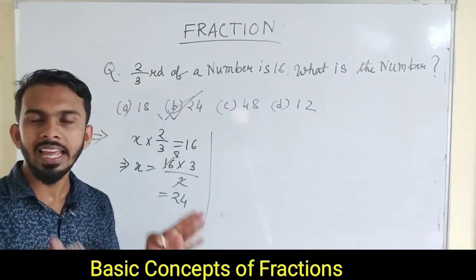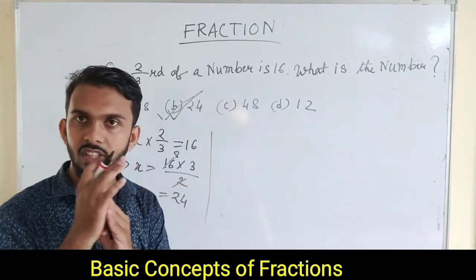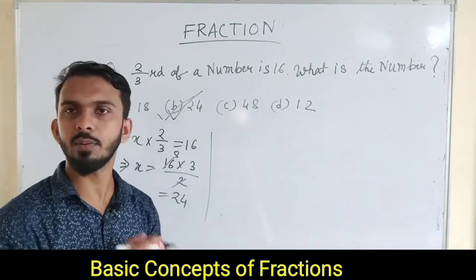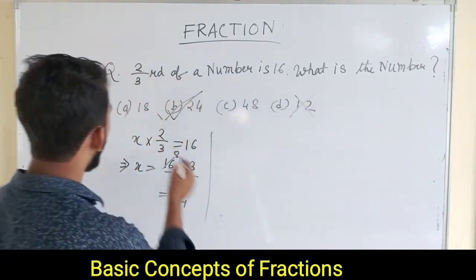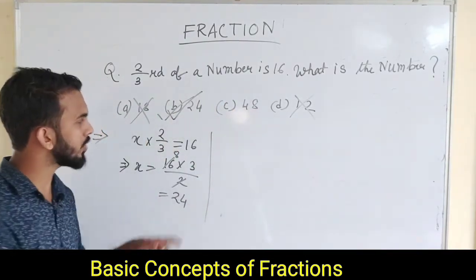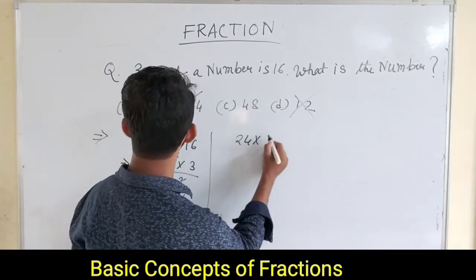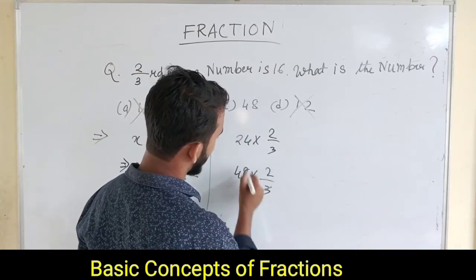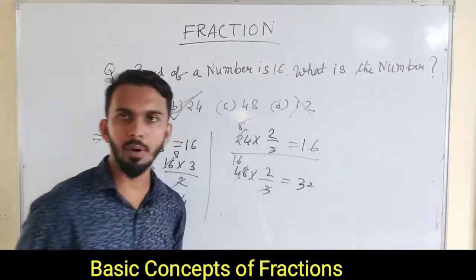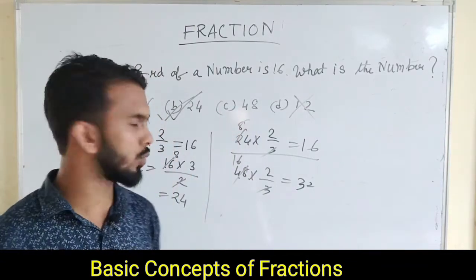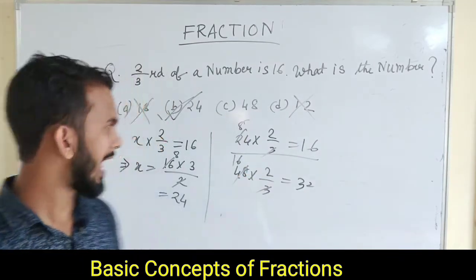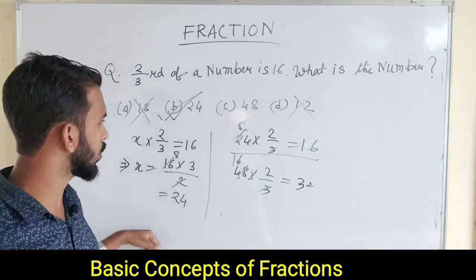We have the options: 12, 18, 24, and 48. We can check: 24 times 2 by 3 equals 16. So 24 is the correct answer. We have to use the answer from the back to verify.